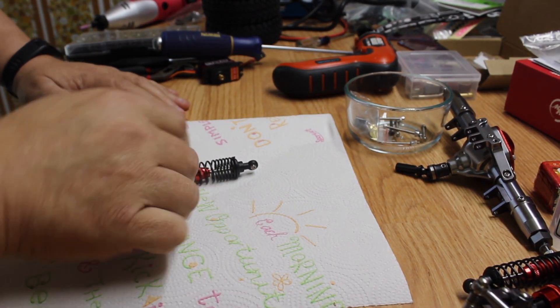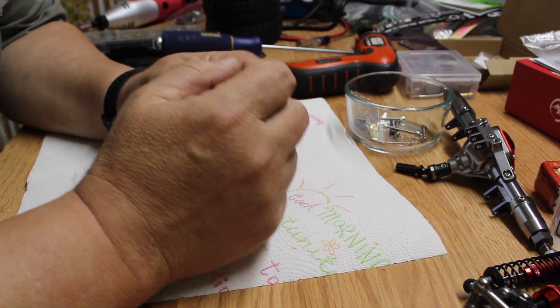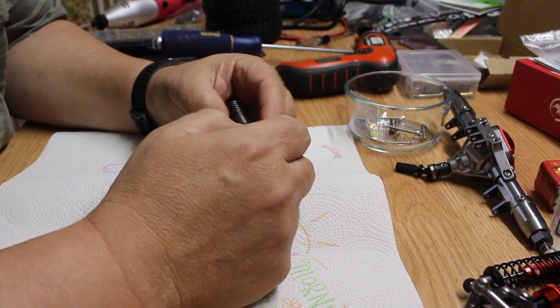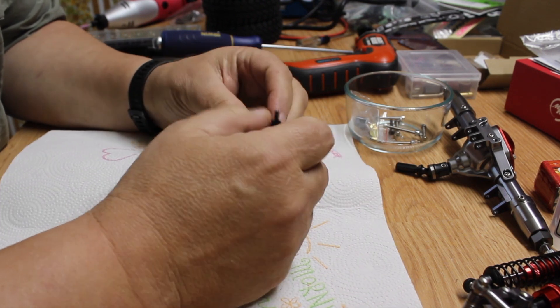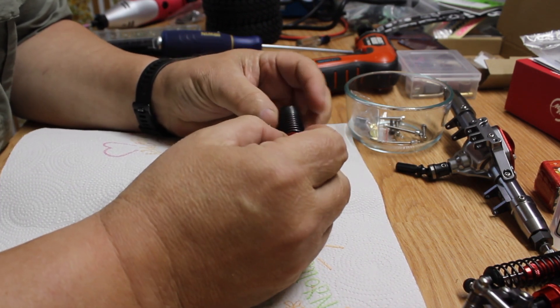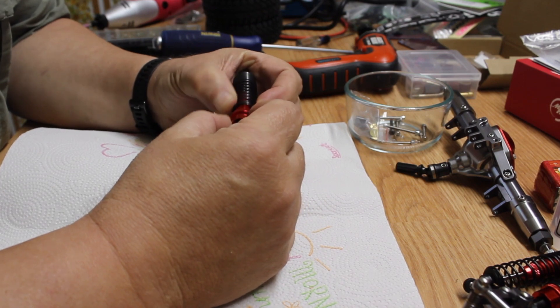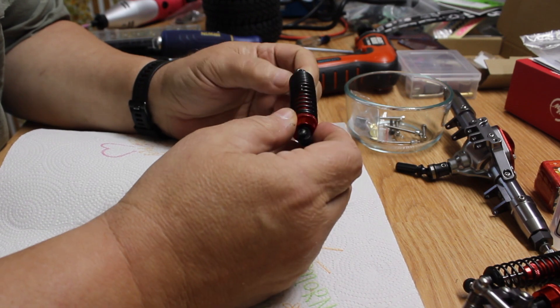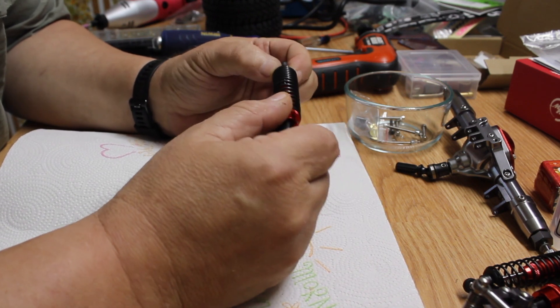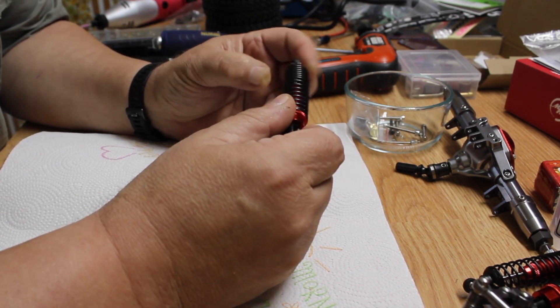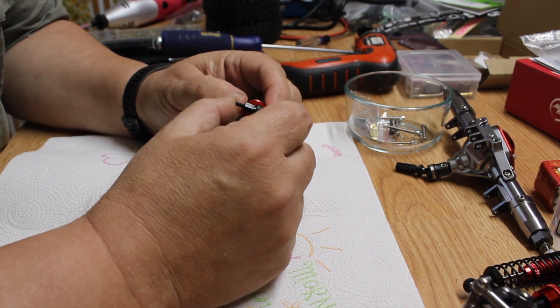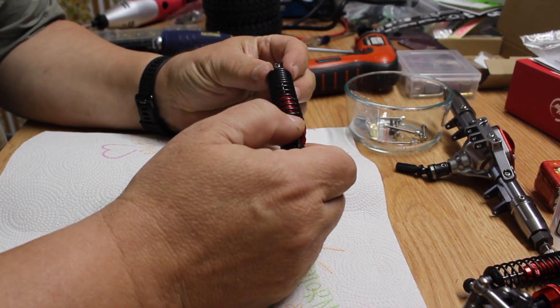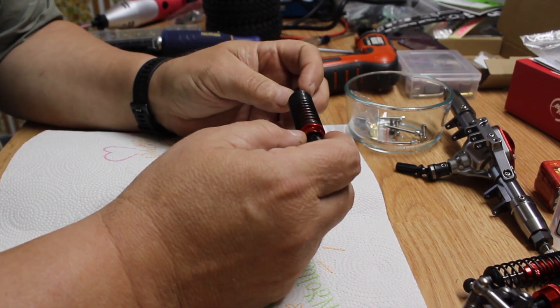Okay YouTube, today we're going to look at the shocks that we're putting on the Black Widow Rock Bouncer. They have aluminum or steel shafts, aluminum housings - the bottom part is plastic but the cap is aluminum. These were shipped with none or very little oil in them.